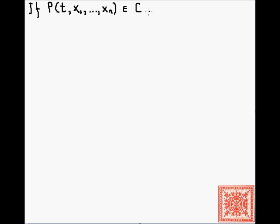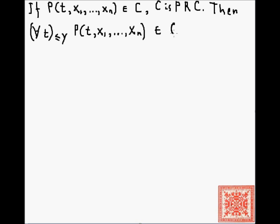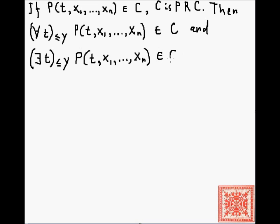This is theorem 6.3 in chapter 3 of Computability, Complexity, and Languages by Davis, Sigal, and Weyuker. If some predicate P of t, x1 through xn is in a primitive recursively closed class C, then the bounded universally quantified version — for all t ≤ y of P(t, x1,...,xn) — is also in C, and the bounded existentially quantified version — there exists t ≤ y of P(t, x1,...,xn) — is also in C.